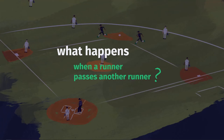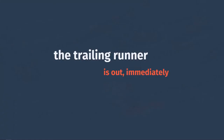Welcome to 20-second baseball lessons. On today's show, what happens when a runner passes another base runner? Rule 509b9 tells us that the runner who is behind and does the passing is called out, and the lead runner just continues as normal.